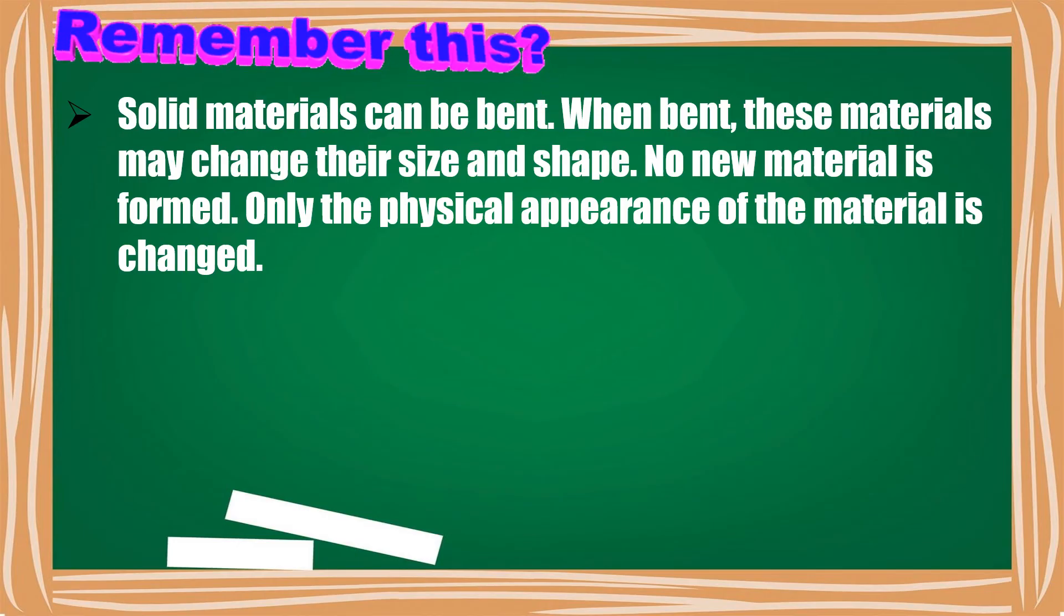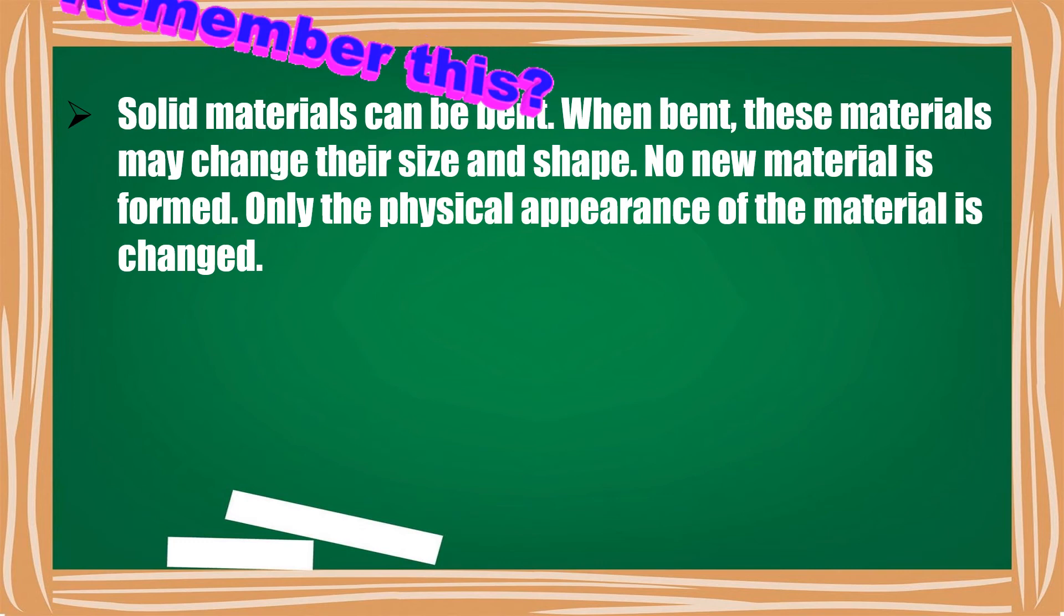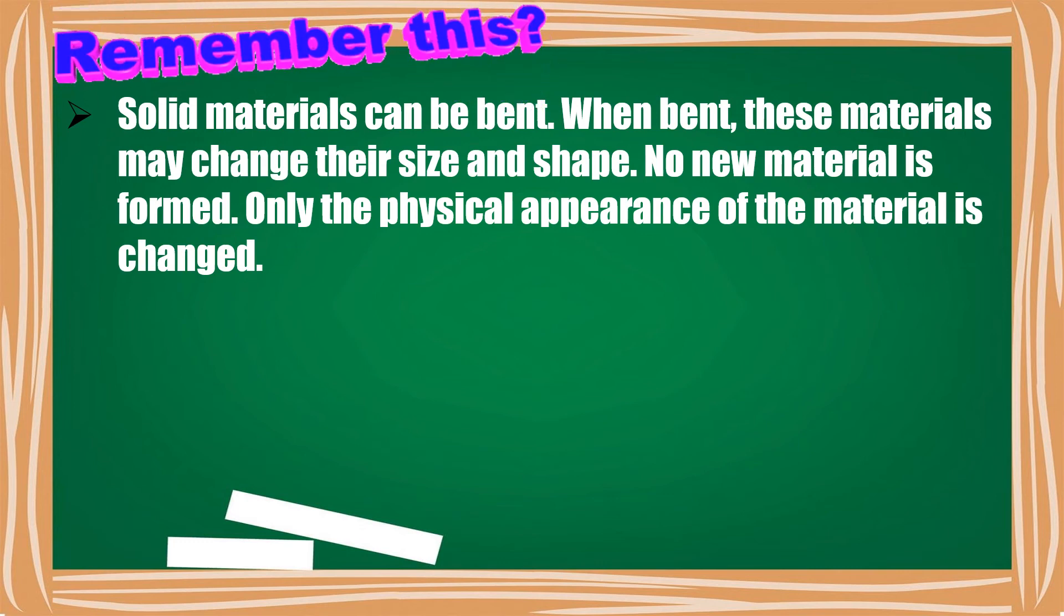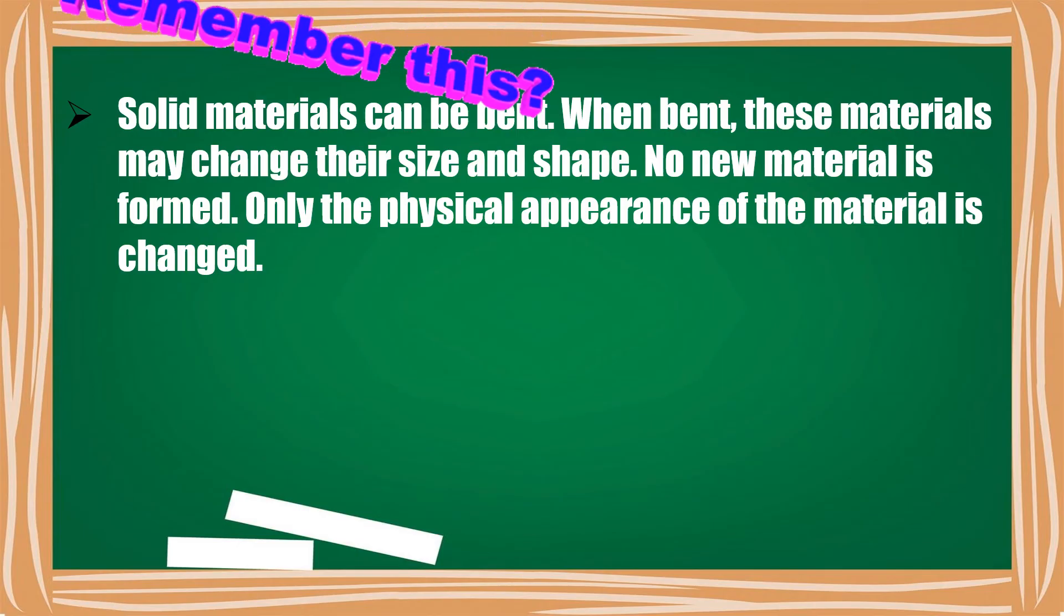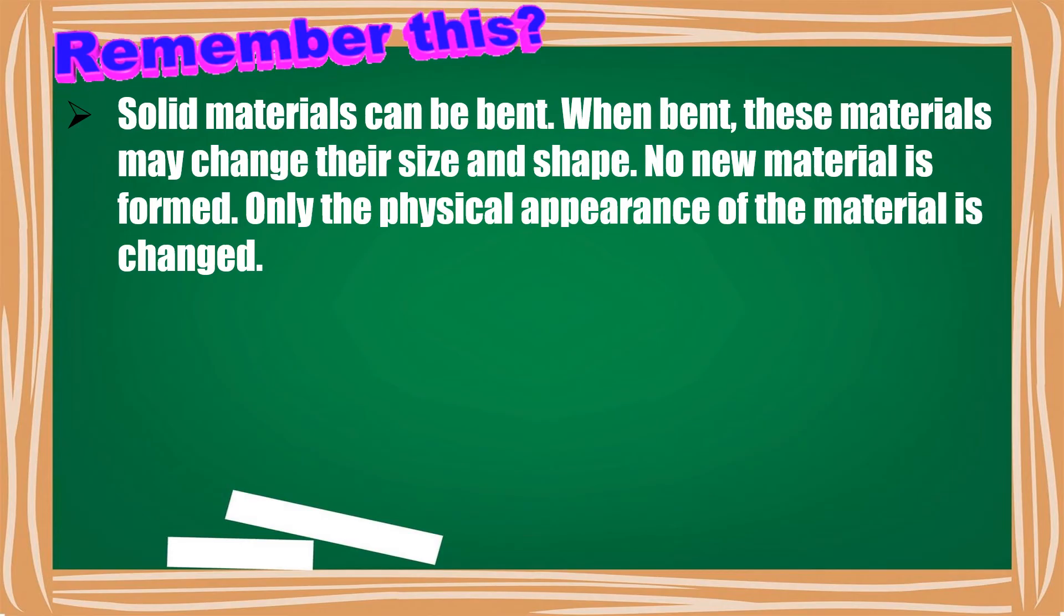Solid materials can be bent. When bent, these materials may change their size and shape, sometimes even texture. No new material is formed. Only the physical appearance of the material is changed.